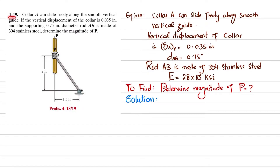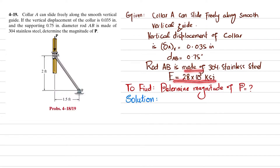Welcome back, problem 4-19. The statement is: collar A can slide freely along the smooth vertical guide. If the vertical displacement of collar is 0.035 inch, and supporting 0.75 inch diameter rod AB is made of 304 stainless steel, determine the magnitude of P. Collar A can move vertically and is supported by rod AB having diameter 0.75 inch, made of 304 stainless steel. Let's start with the solution.